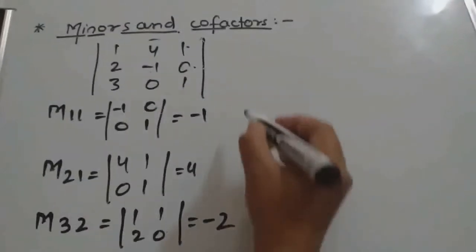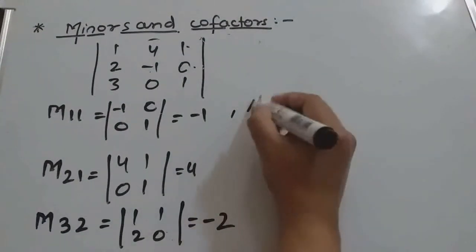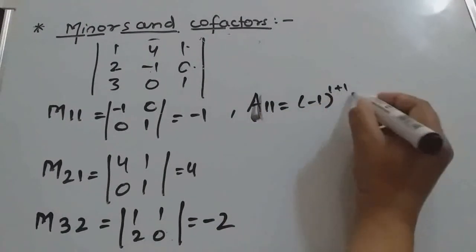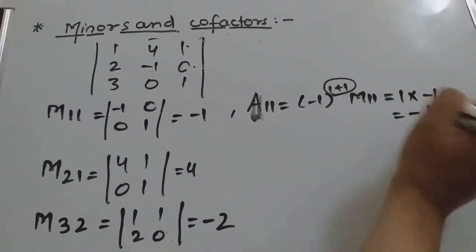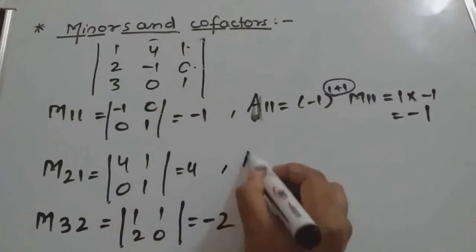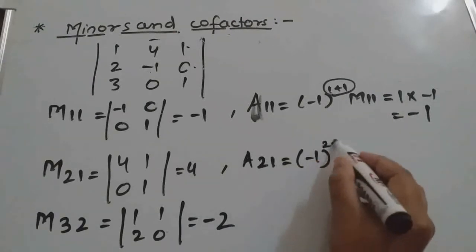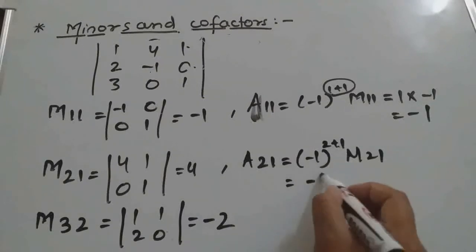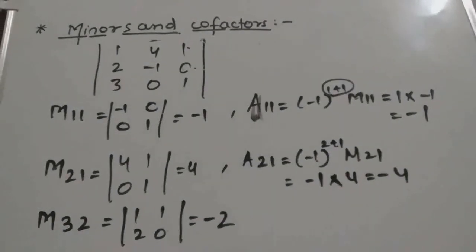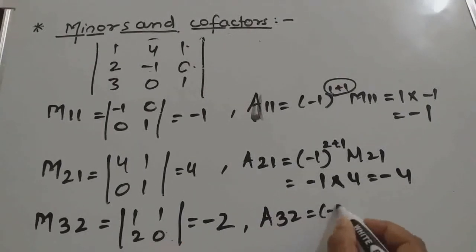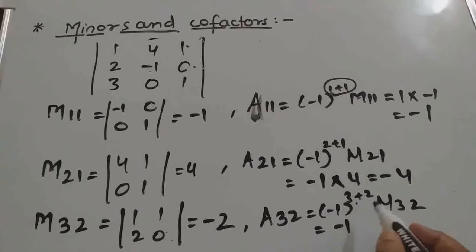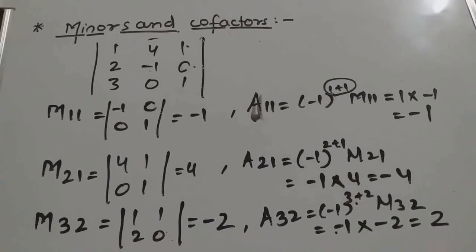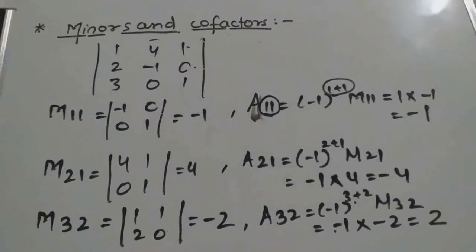The related cofactors: A11 = (-1)^(1+1) × M11 = (-1)^2 × (-1) = 1 × (-1) = -1. A21 = (-1)^(2+1) × M21 = (-1)^3 × 4 = -1 × 4 = -4. A32 = (-1)^(3+2) × M32 = (-1)^5 × (-2) = -1 × (-2) = +2. Since the power is odd (5), the sign of the minor changes.